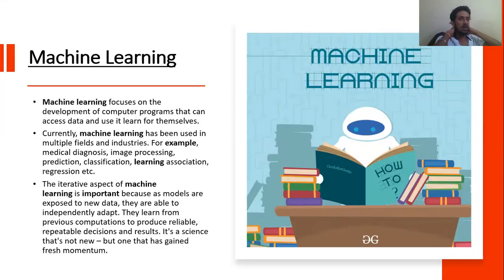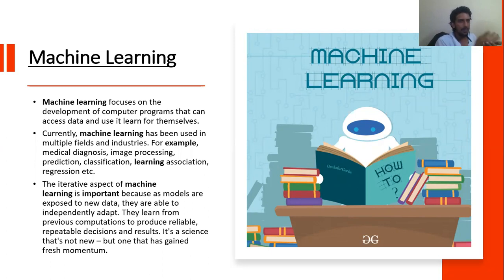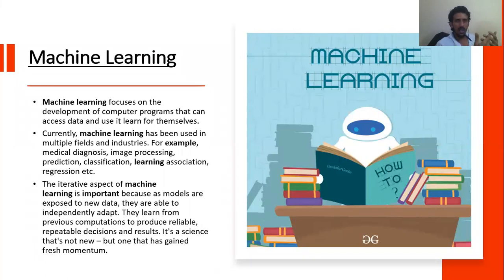To talk about what is machine learning — as we all know, this concept focuses on the development of programs that can learn and process information by themselves. Currently this concept is already being used in a lot of fields and industries, for example medical diagnosis, image processing, prediction, classification problems, association problems, and regression problems.